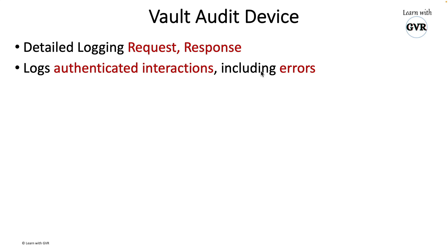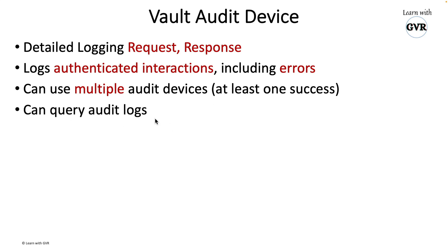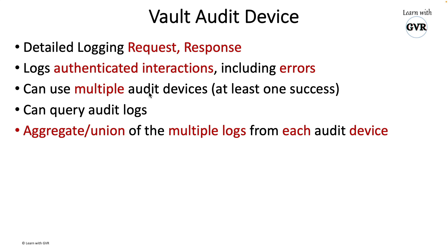You can attach multiple audit devices. For example, on one Vault server you might want to log to one file and also to Elasticsearch. However, at least one Vault audit device must succeed in logging; if both attached devices fail to log, Vault will consider it as having no logging. If you have audit logs in the form of files, you can query them, and with multiple audit devices you can do aggregation, union, etc.